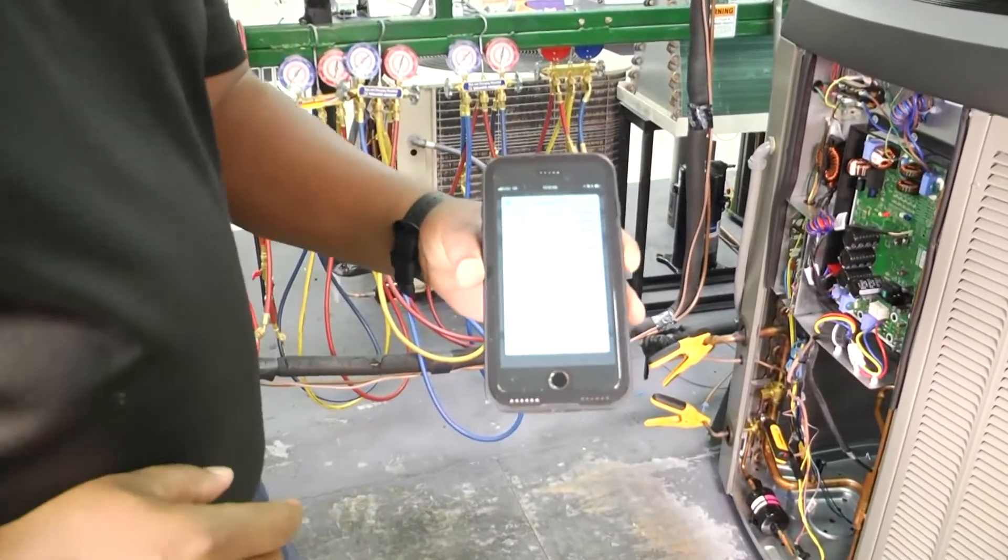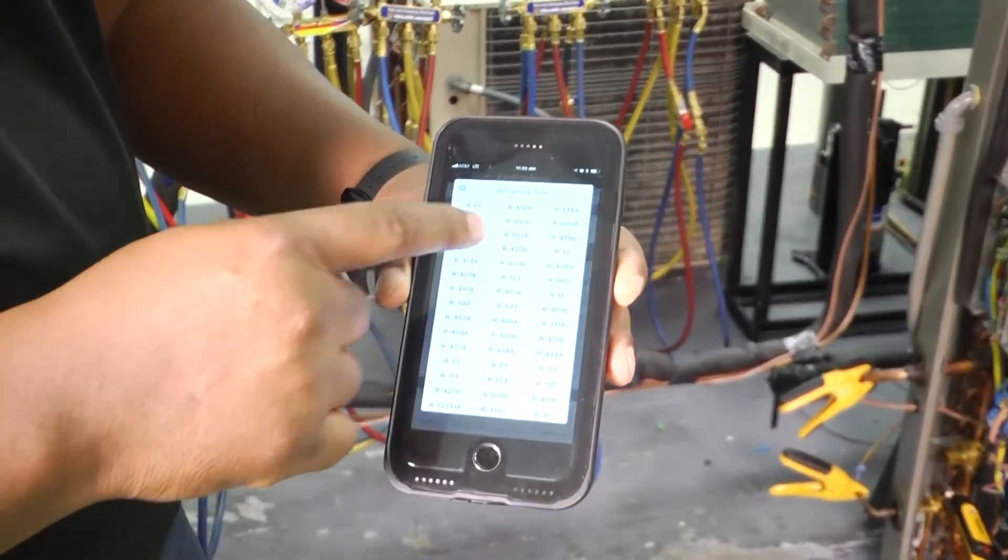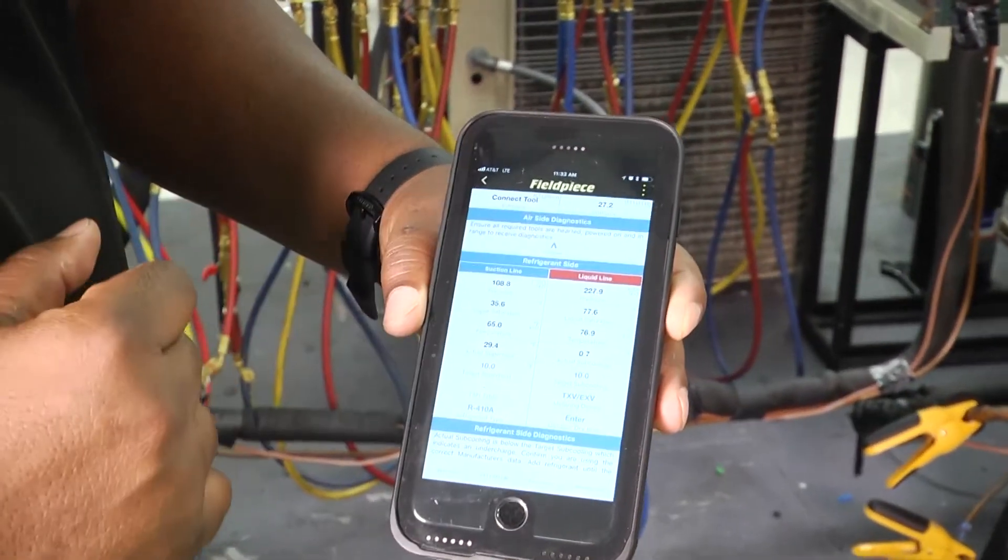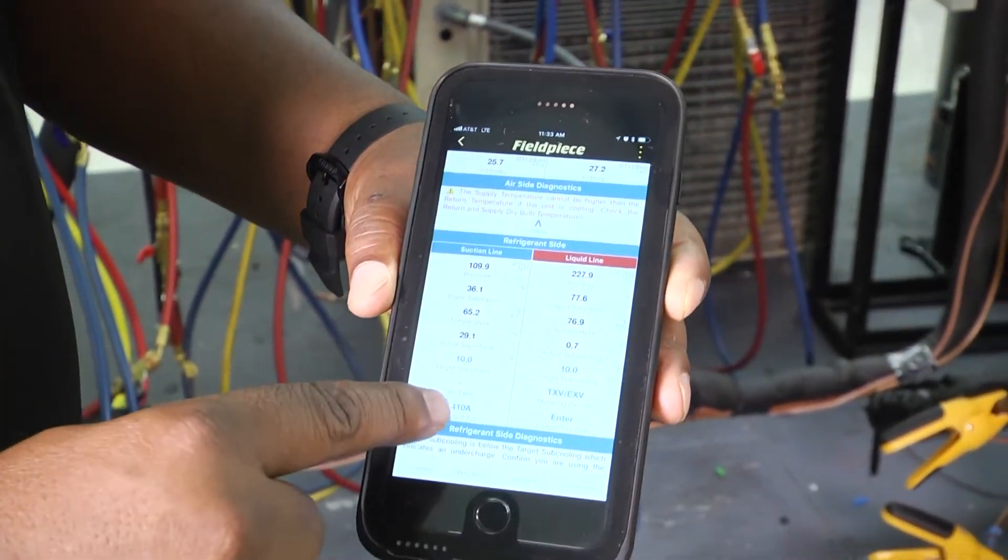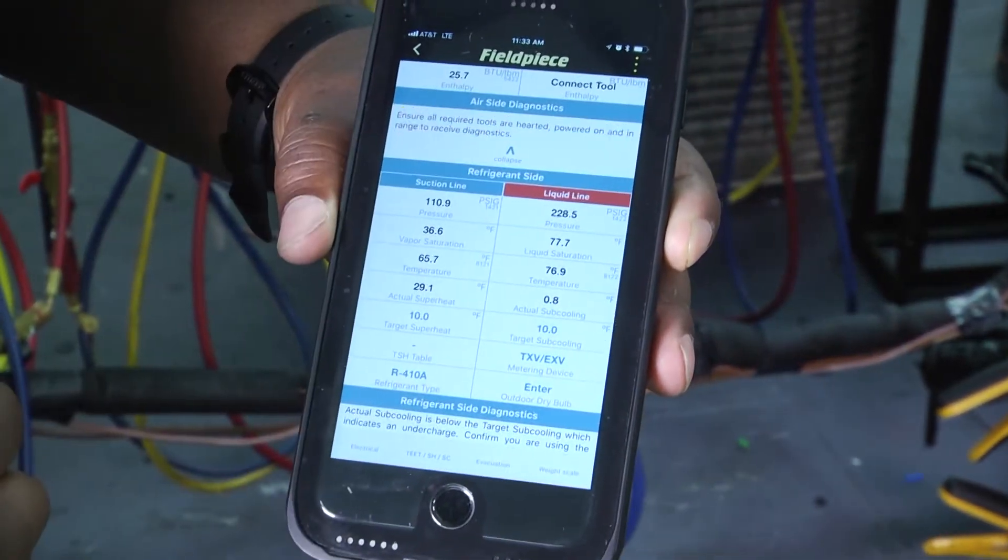Also there's a feature on your phone, you'll have to go to the collapsibles there and you're going to select your refrigerant type. So you select R410A, it gets your refrigerant type in there. We have a TXV, so you can see that.